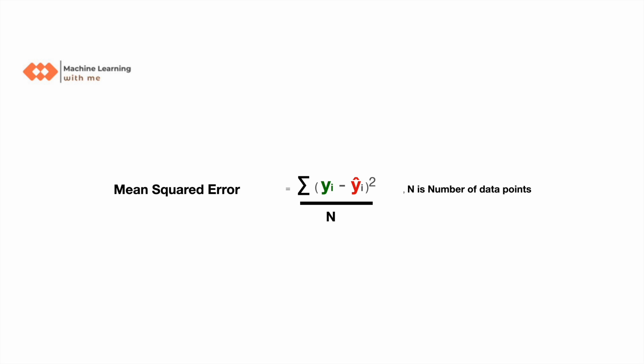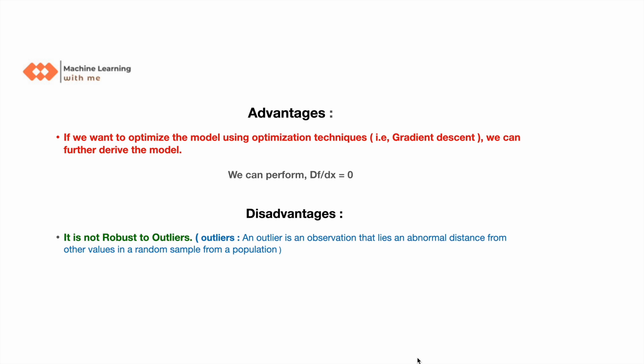As per our sample, n would be 3. Now let's discuss the advantages of MSE. If we want to optimize the model using optimization techniques such as gradient descent, we can further derive the model with respect to mean squared error. In contrast, with MAE we cannot optimize the model using gradient descent, so this is an advantage of MSE over MAE.